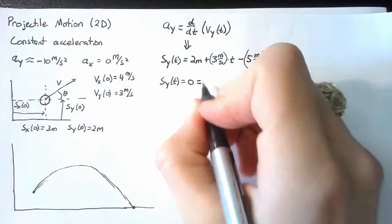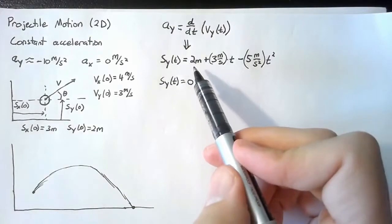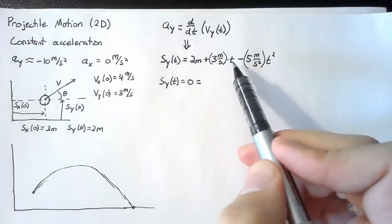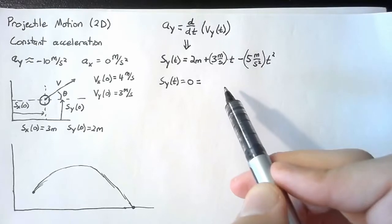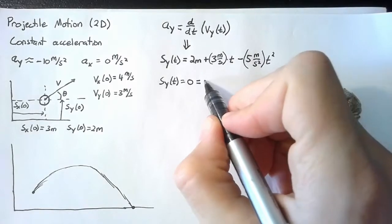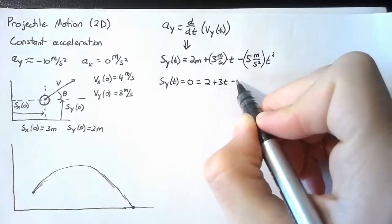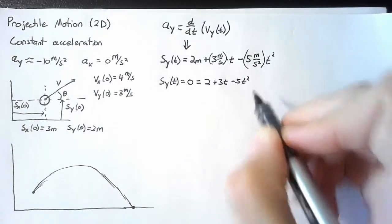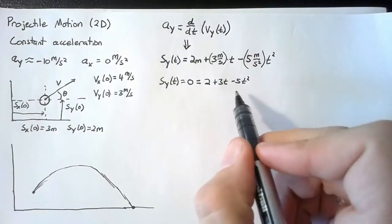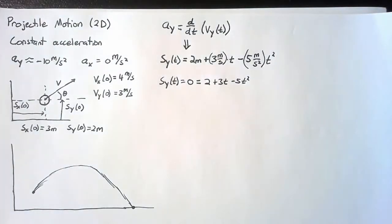Well now we have an equation to solve. I'm going to drop the units. As long as we give time in seconds, we know that the units are all workouts. So we can just say that this is 2 plus 3t minus 5t squared. And here we have a quadratic equation and so we can plug that into the quadratic formula.